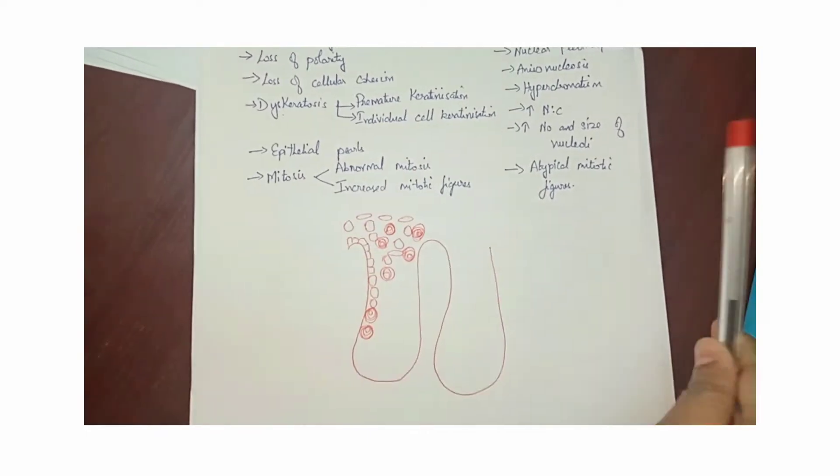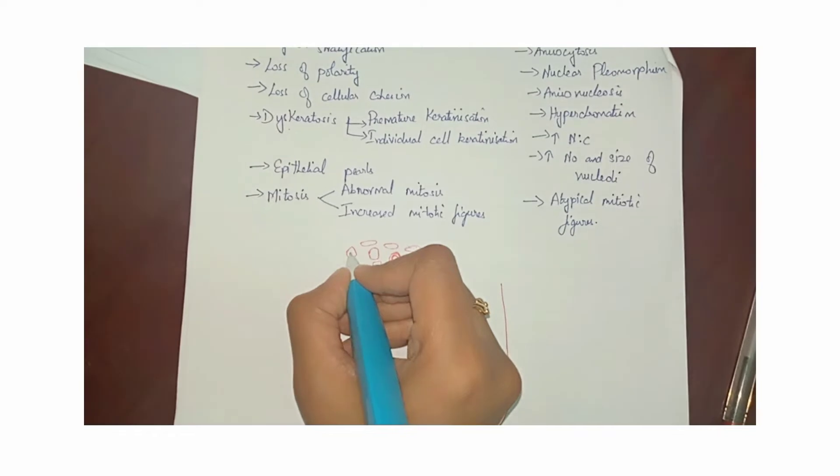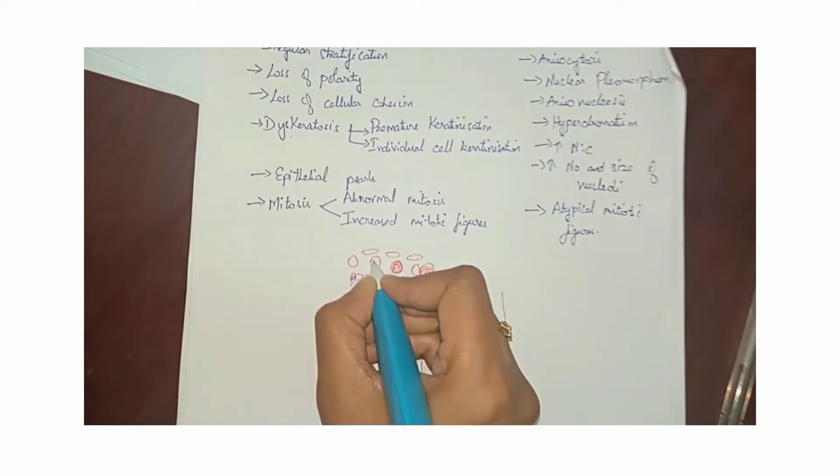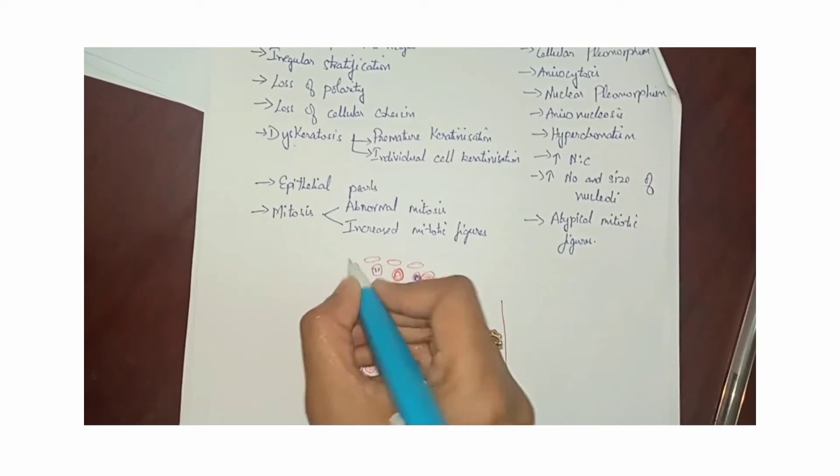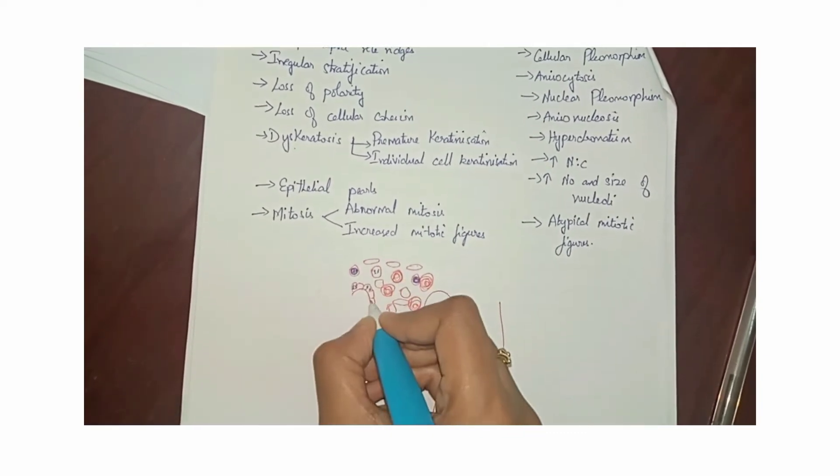Then there is the mitosis. About mitosis, there is going to be abnormal mitosis. That is, mitosis will also be present at the basal level or at any level of the epithelium, and also there is going to be increase in the mitotic figures.